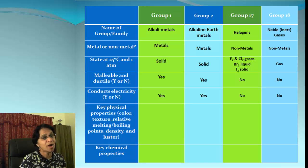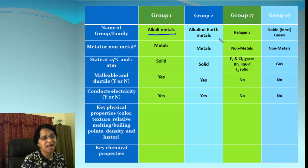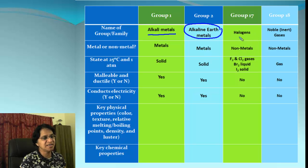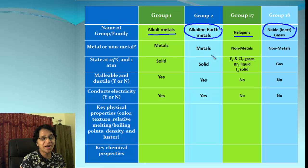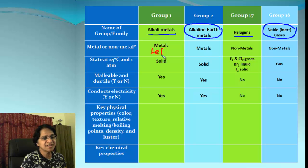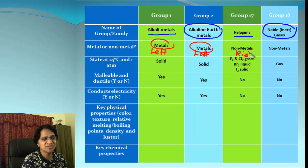Let's compare the properties of groups 1, 2, 17, and 18. The very first thing is the name of the group: group 1 is alkali metals, group 2 is alkaline earth metals, group 17 is halogens, and group 18 is noble or inert gases. Both group 1 and group 2 are on the left side of that zigzag line, so they are metals. Group 17 and group 18 are on the right side, so they are non-metals.